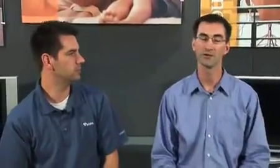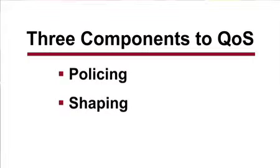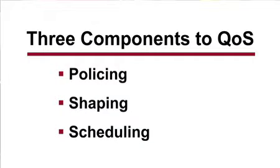So what are the different building blocks or components of QoS? There are three major components: policing, shaping, and scheduling.